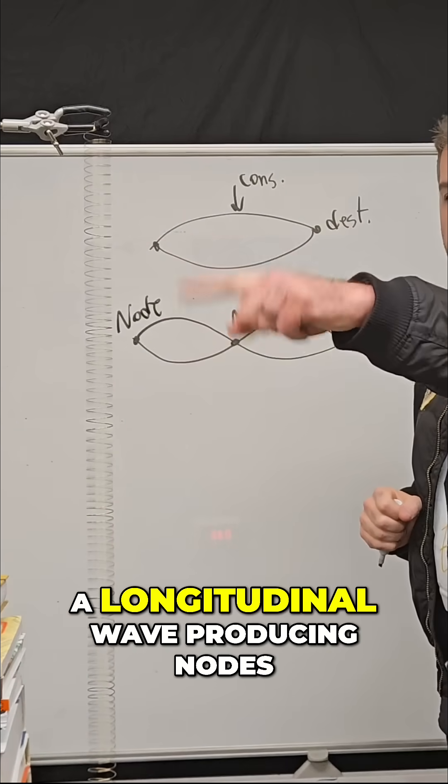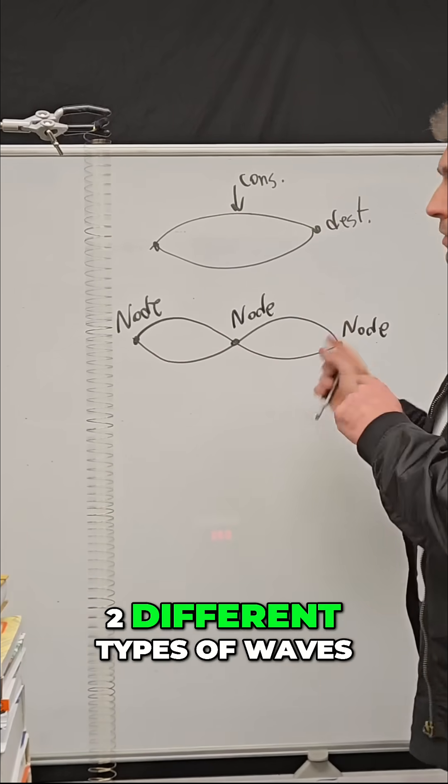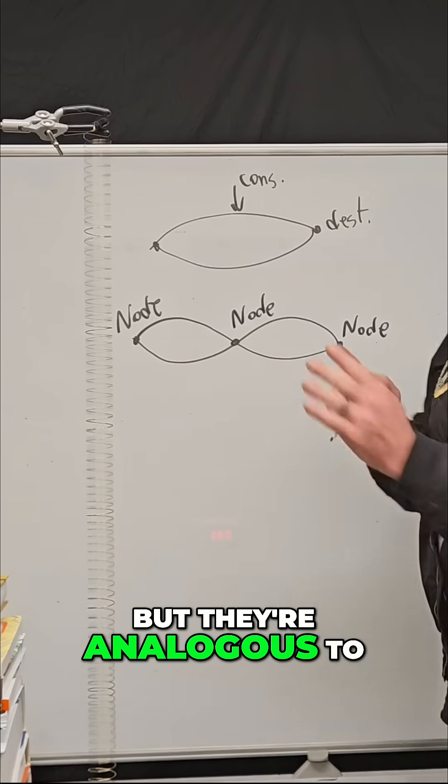And so this is a longitudinal wave producing nodes and this is a transverse wave shaking your hand up and down. Two different types of waves but they're analogous to each other.